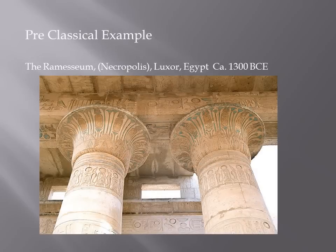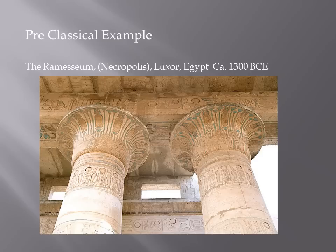Prior to the Greeks, there was a great deal of work using columns and capitals in other cultures as well. Going back about a thousand years prior to the Greek use of decorative capitals, we have an ancient Egyptian example in the Ramesses in Luxor, Egypt. The Ramesses is sometimes referred to as being in the city of the Necropolis — the city of the dead — which was a city that Ramesses II had constructed during his reign.